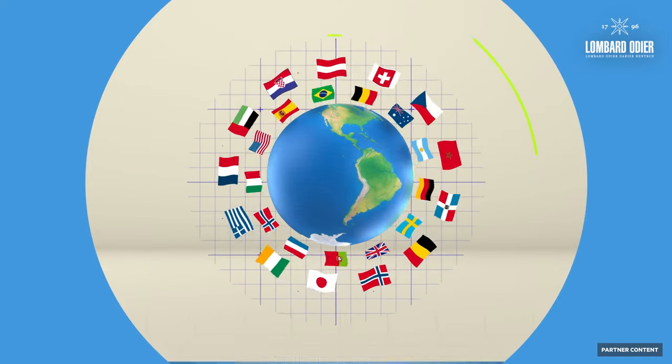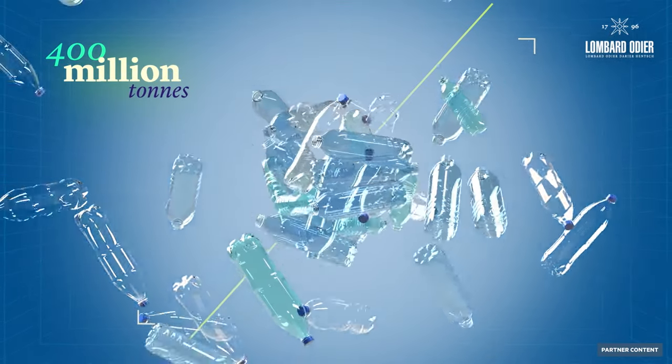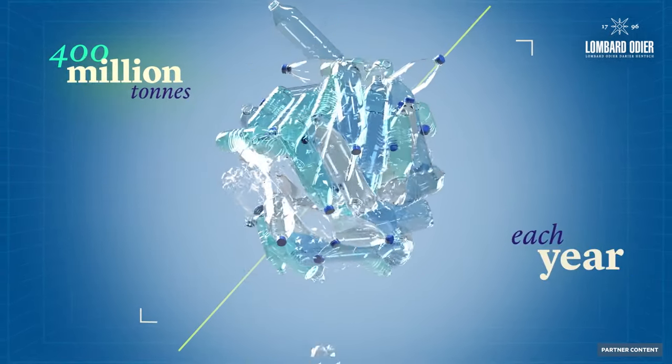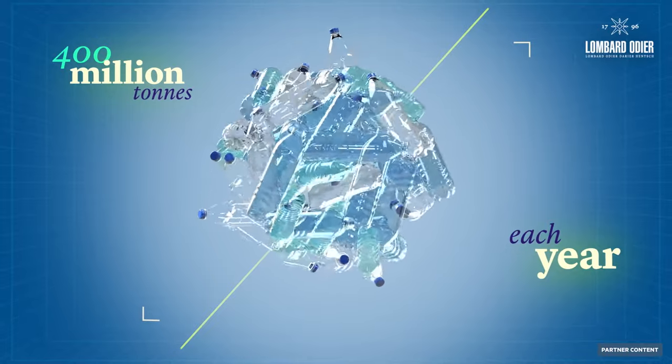So how do we do that? More than 400 million tonnes of plastic are now produced each year, equivalent to the mass of the global population.